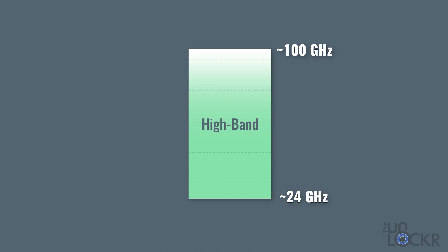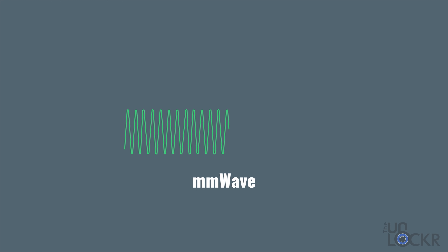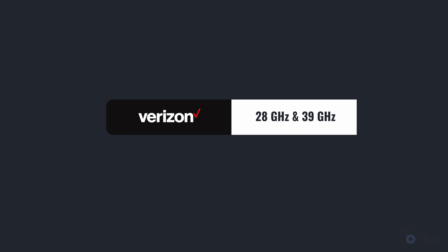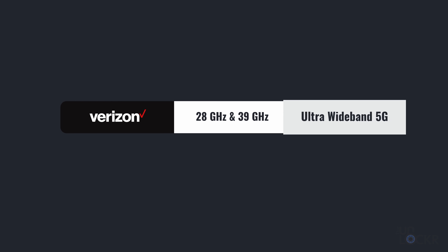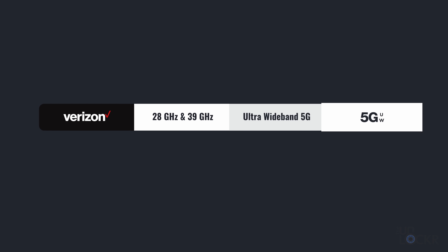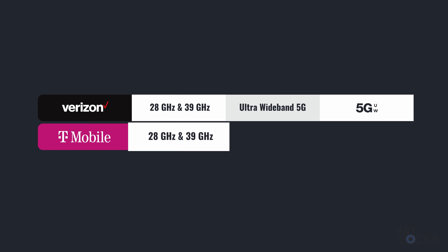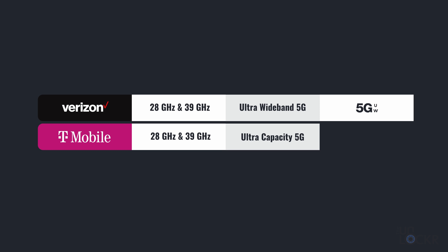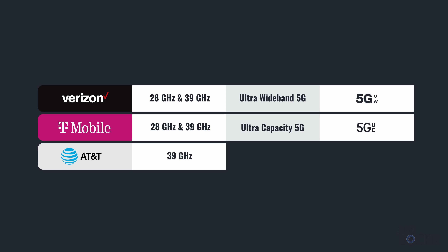Lastly, we have millimeter wave — the term used for frequencies above 6 gigahertz, also called high band, and usually they're a lot higher than that. They're called millimeter waves because the wavelengths themselves are between 1 and 10 millimeters in length, compared to lower frequencies that are usually a dozen or so centimeters. Verizon uses 28 gigahertz and 39 gigahertz for their millimeter wave 5G, which they call ultra wide band 5G, with a 5G UW icon. T-Mobile uses the same 28 and 39 gigahertz and calls it ultra capacity 5G with a 5G UC icon. AT&T uses 39 gigahertz and calls it 5G Plus.